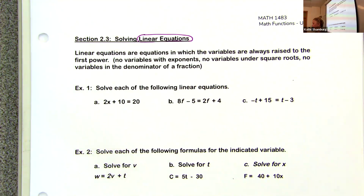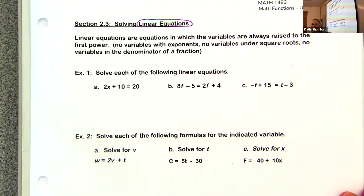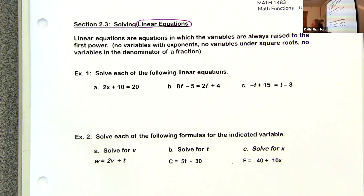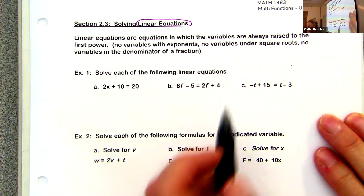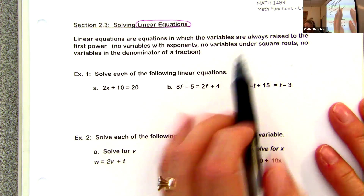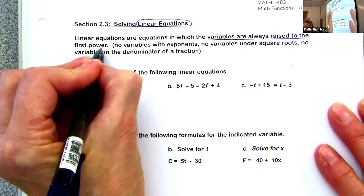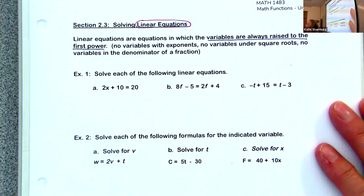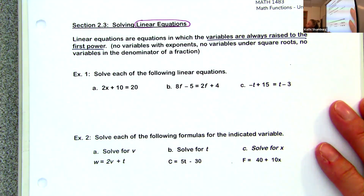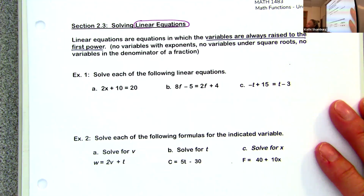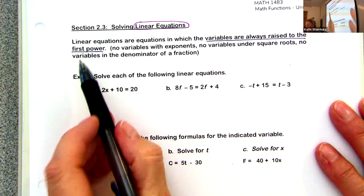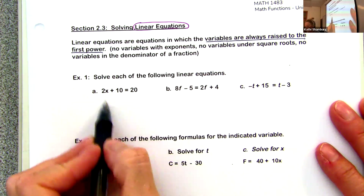It is 'linear,' not 'linear.' In this section, we're going to be dealing with only linear equations. How do we know an equation is linear? The variables are always raised to the first power — you won't see an exponent, because if there's no visible exponent it's understood to be one, meaning it's raised to the first power.